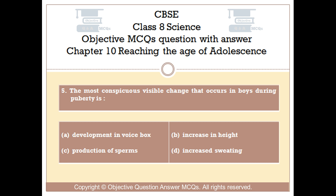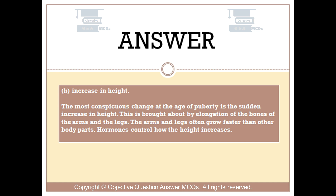The right answer is Option B: increase in height. The most conspicuous change at the age of puberty is the sudden increase in height. This is brought about by elongation of the bones of the arms and the legs. The arms and legs often grow faster than other body parts. Hormones control how the height increases.